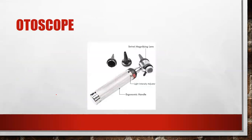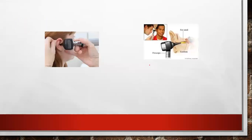This is a picture of an otoscope. You can see different parts including the handle, the light intensity adjuster — we can adjust the light intensity to visualize the area clearly — and a lens for focusing on the area. This is a picture of how we can insert the otoscope in the patient's ear. We place the hand on the handle of the otoscope, which causes light to pass through and illuminate the ear canal and eardrum.